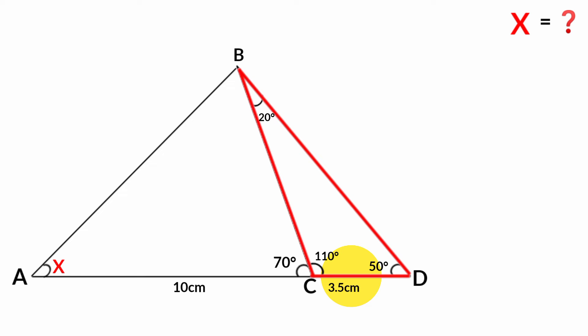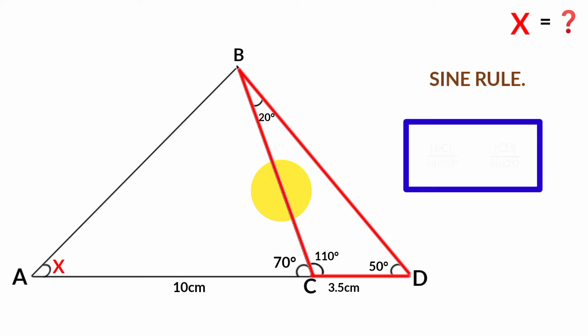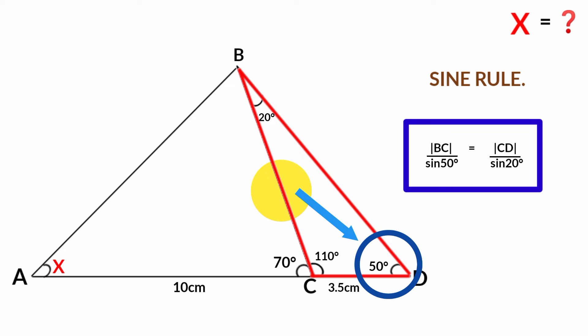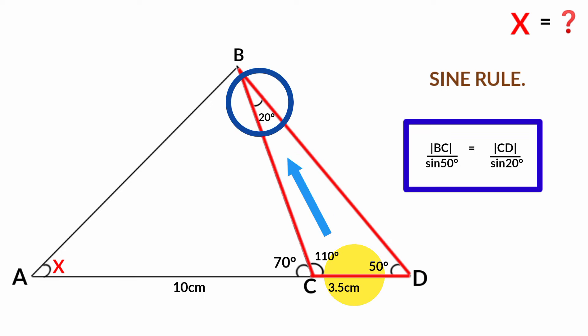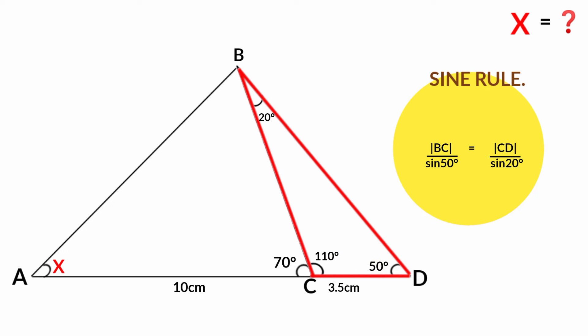Now from triangle PCD, since we have the length of this side, we can use the sine rule to relate these sides. Using the sine rule: line BC over sine 50 degrees equals line CD over sine 20 degrees. Line CD is 3.5 centimeters in length.